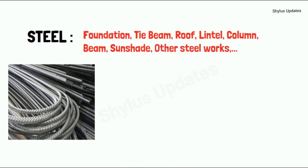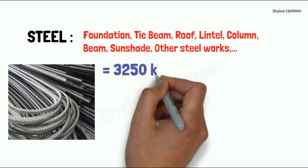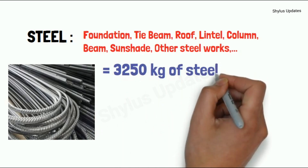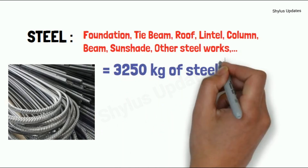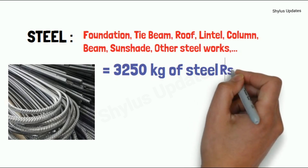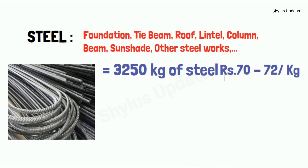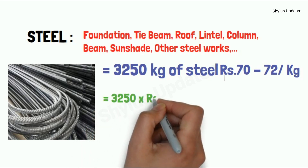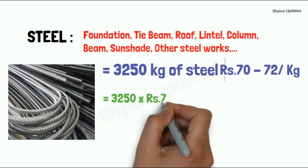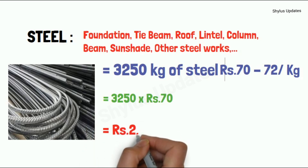For a 700 square feet house, 3,250 kilograms of steel is required. The current market rate of steel is Rs. 72.72 per kilogram. When you multiply 3,250 into Rs. 70, you get Rs. 2,27,500.